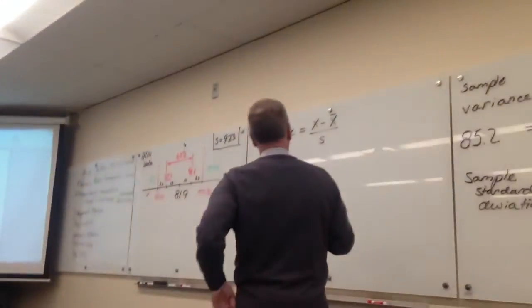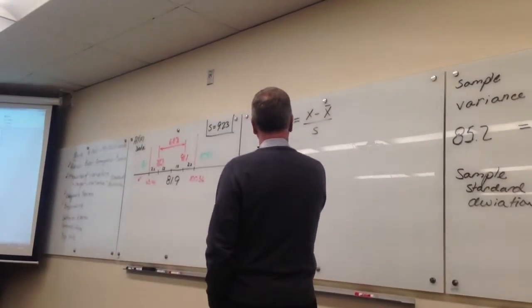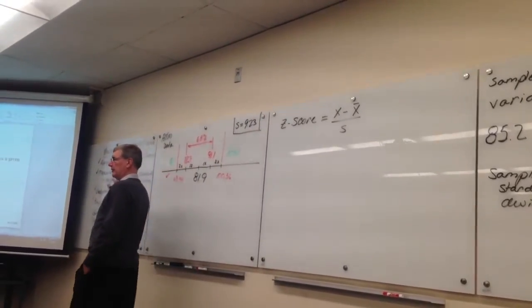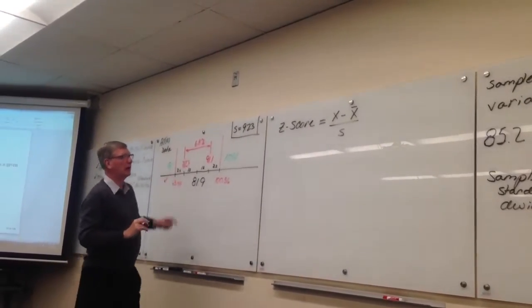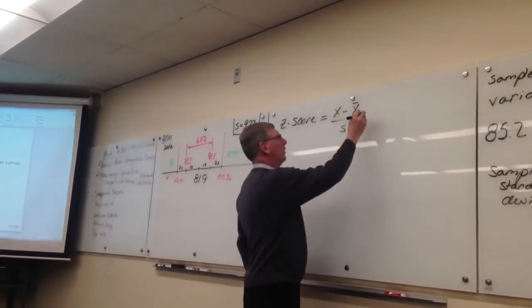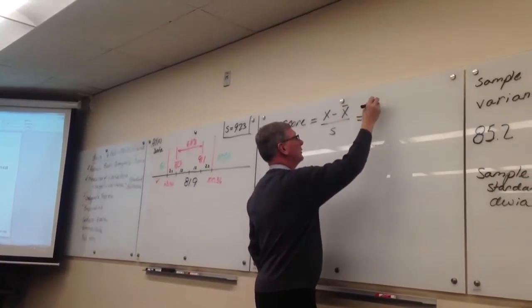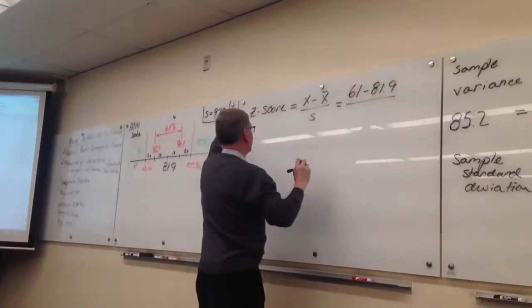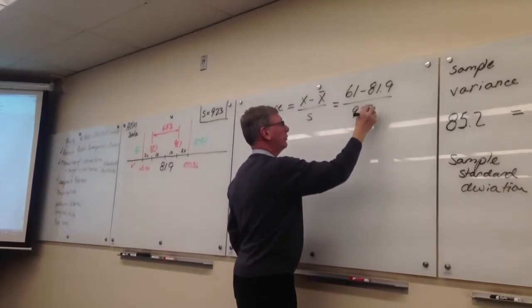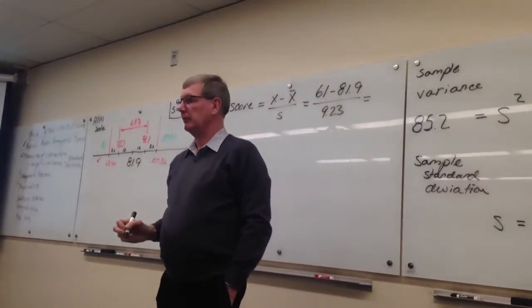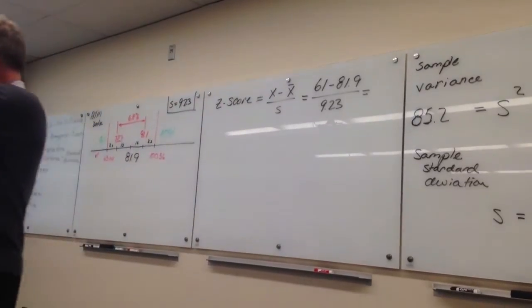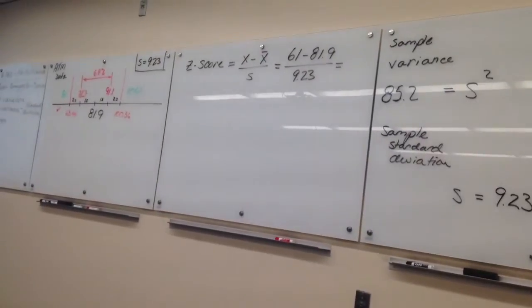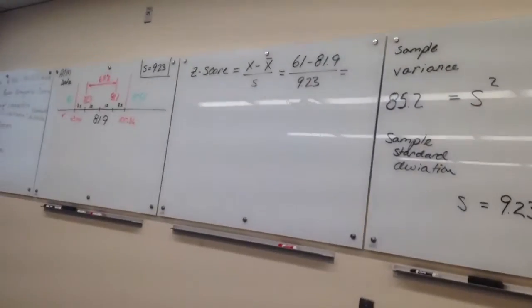So let's look at our z-scores for every piece of data. Well, the most interesting pieces of data for us are the ones that are the farthest out to the left and the farthest out to the right. So we know 61 is our lowest piece of data. So what's the z-score for 61? Well, it's 61 minus 81.9 divided by our standard deviation, which is 9.23, and that equals negative something. If somebody could give me that number, I think it's going to be negative 2.something.